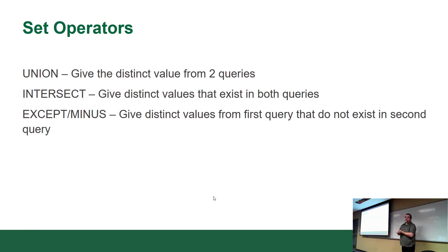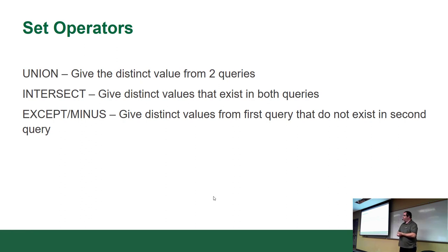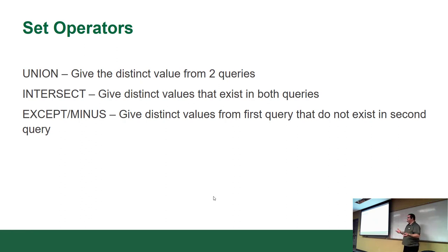Set operations is the last topic. Set operations means you're working on two different sets of values from two disparate sources of data. A UNION gives you the distinct values from two different queries — everything without duplicates. INTERSECT gives you distinct values that exist in both. EXCEPT (or MINUS depending on the database) gives you everything in query one minus any matches in query two.